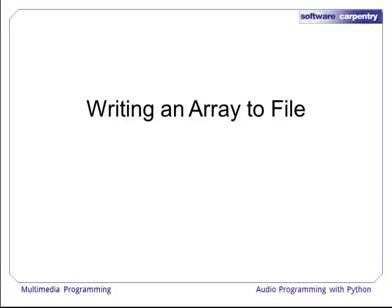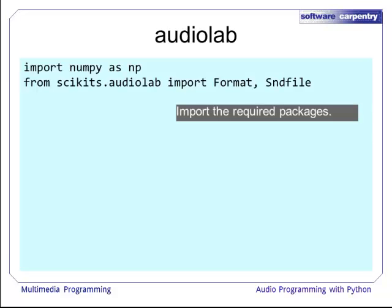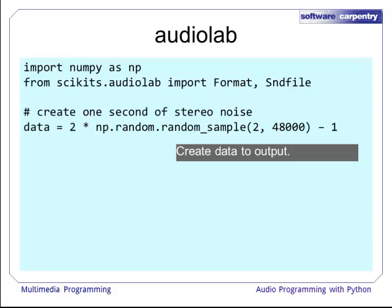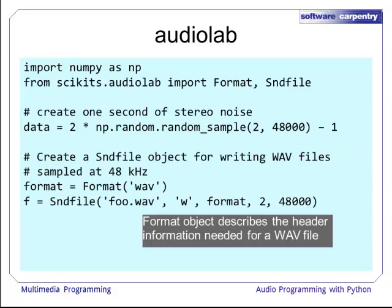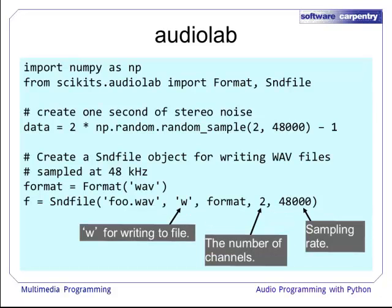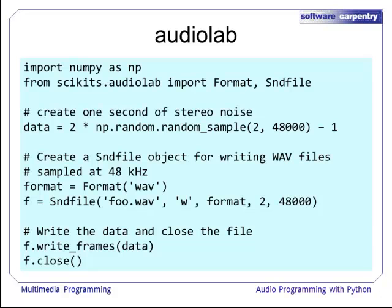Now we will cover how to write an array to file. First we import the required packages, including format and sound file from AudioLab. We create 1 second of stereo noise as our data. We then create a sound file instance for writing WAV files with a sampling rate of 48 kHz, using the format object to describe the header information. We create a sound file instance with the file path and name as the first argument, 'W' for writing as the second, the format instance as the third, number of channels as 2, and sampling rate as 48,000. We then write the frames of the signal to file and close the file afterwards.